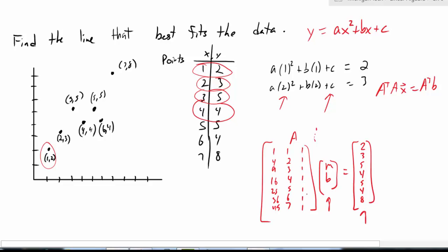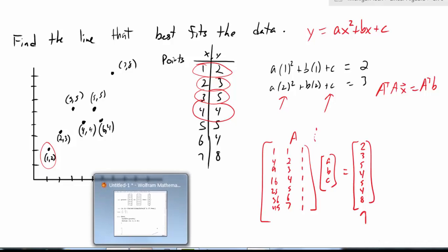So my A would just change by adding one column. Now what about my next vector here? This would no longer be m, b. But rather it would be a, b, and c that I would be trying to find. And that right hand side would actually stay exactly the same. So let's modify this in Mathematica.